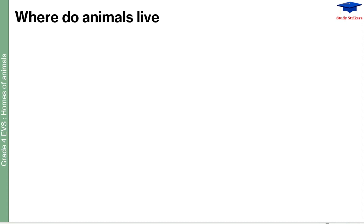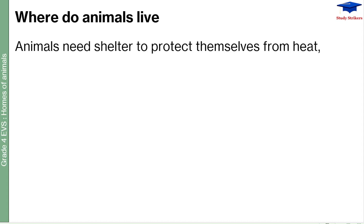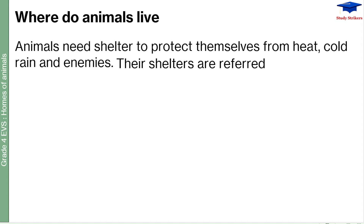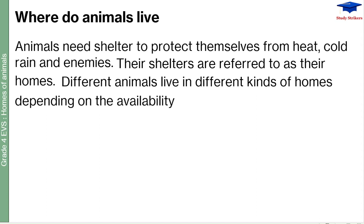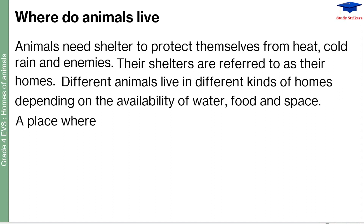So where do animals live? There are animals all around us, so where do they live? Animals need shelter to protect themselves from heat, cold, rain, and enemies, just like us. Some animals are already protected by nature, but some of them need to protect themselves more. Their shelters are referred to as their homes. Different animals live in different kinds of homes depending on the availability of water, food, and space. A place where an animal lives is called its habitat.